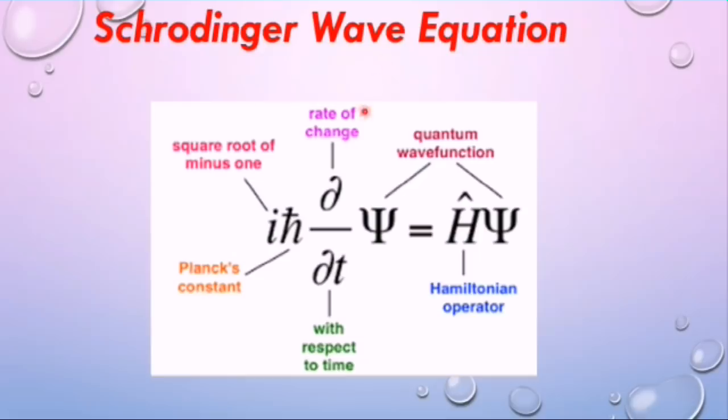Schrödinger Wave Equation. Schrödinger formulated a differential equation that describes the wave nature of a quantum mechanical system. The concept of a wave function and its discovery is a significant landmark in the development of quantum mechanics.